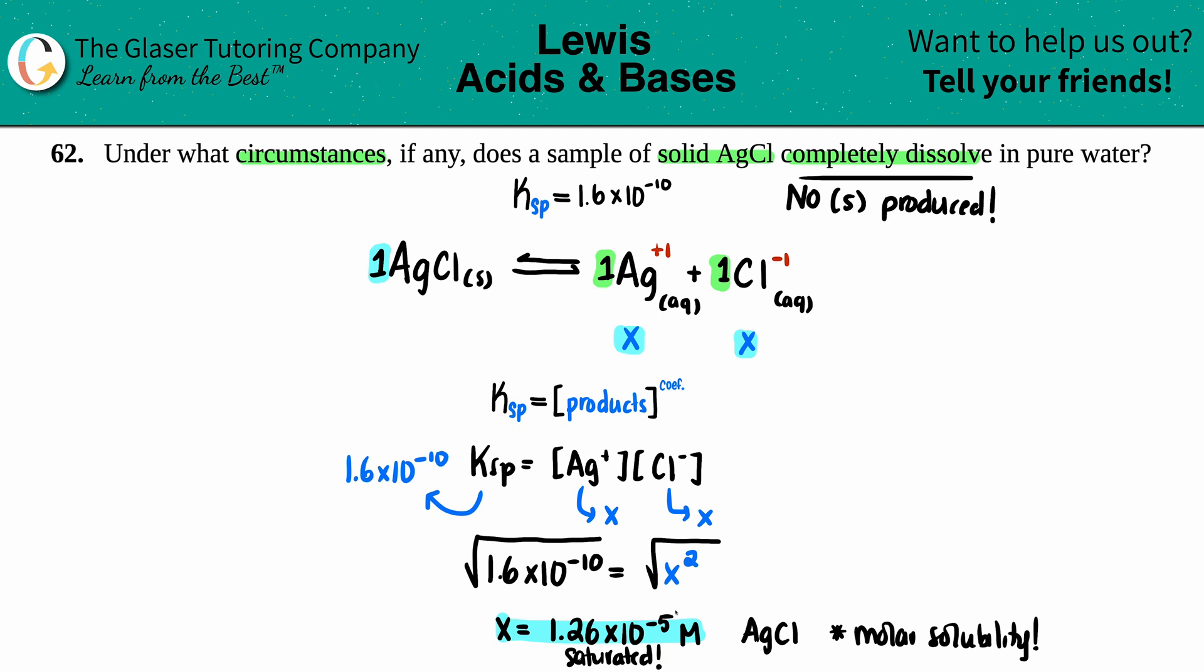A saturated solution is basically right at the cusp of when you first start making your precipitates or solids. So anything over your molar solubility, you're going to be a supersaturated solution and you will form solid - you went over your limit. But if you have a molarity that's less than this, you're unsaturated, which means that you could have added more. You could have added more molarity basically until your molarity reached this value, but nothing over.